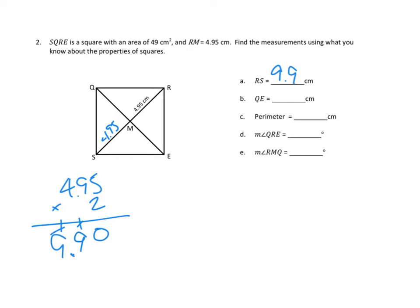Next, let's look at QE — it's this diagonal. Even just in a rectangle, the two diagonals are going to be equal. So QE, this diagonal, must be exactly as long as RS. We've already done that work — QE is also 9.9 centimeters.